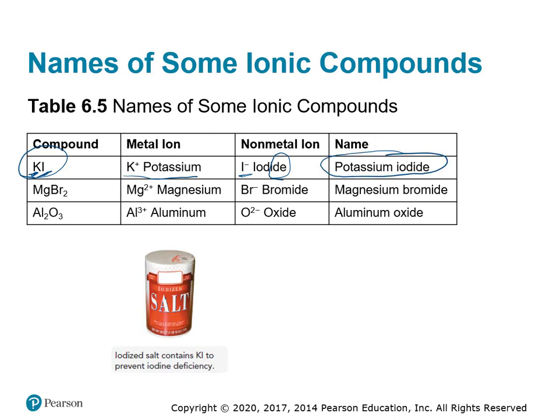MgBr2: we have magnesium plus 2 ion and bromide ion, giving us magnesium bromide.